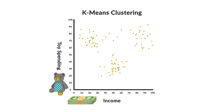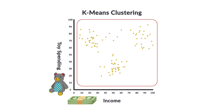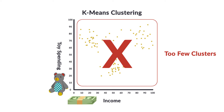Our job here is to cluster the data. The easiest way is to put everyone in one big cluster. While this is easy, it doesn't give us any more information about our marketing message or to whom we should sell. One big cluster is too few clusters.